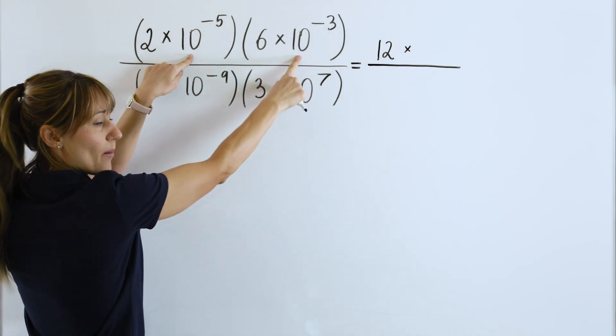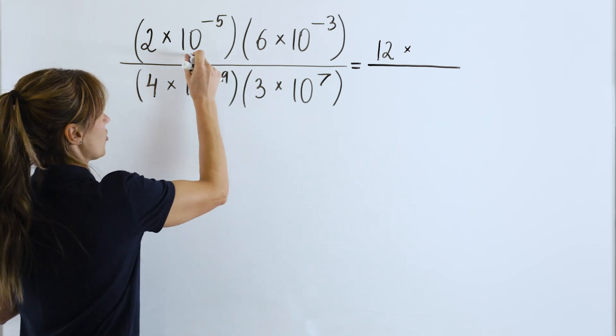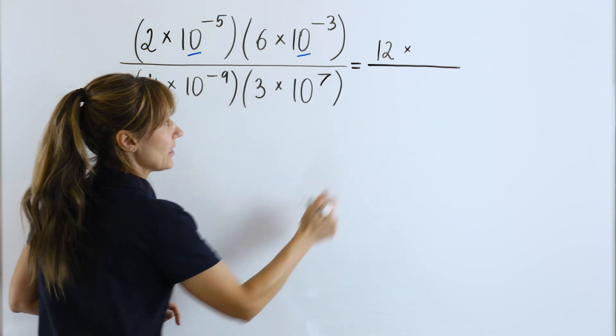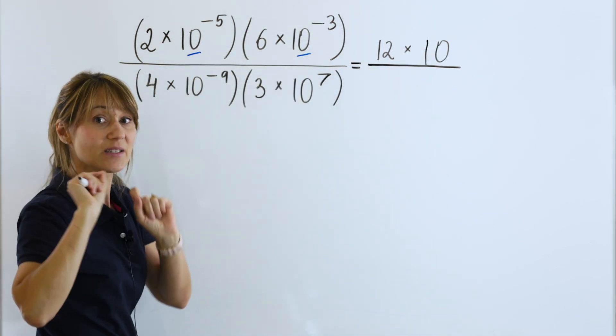Times. Here we are multiplying with the same base. The base is 10. So, when you multiply with the same base, keep the same base and add the exponents.